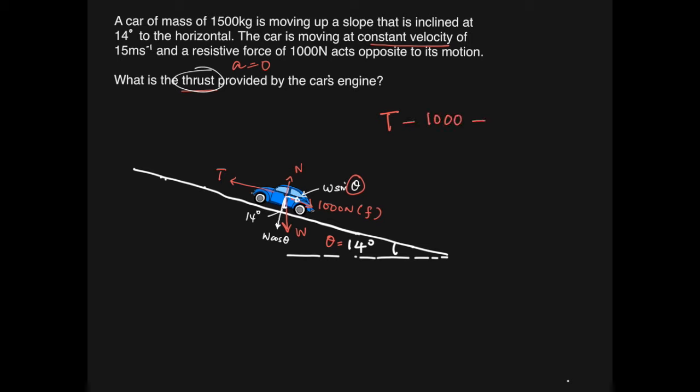Now to write the equation, we have along the slope: the thrust minus the opposing force of 1000 Newton minus W sin theta, which equals ma. Now we have already noted that the acceleration is zero, so this is zero. So the forward thrust equals the opposing force plus the component of weight acting downwards.